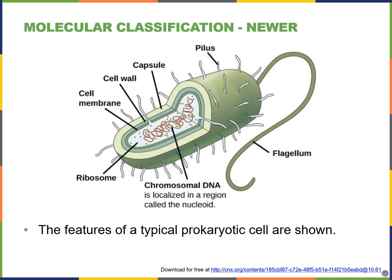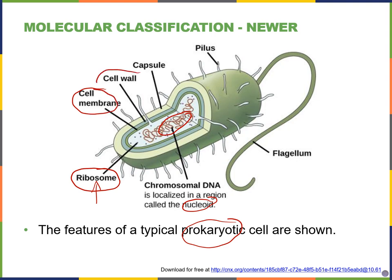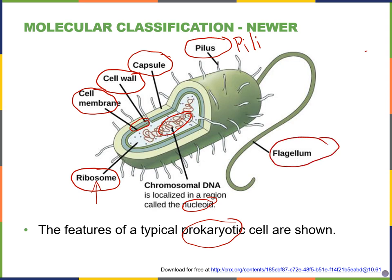Looking at a prokaryotic cell diagram, we see a nucleoid region where the chromosome is found, and some free-floating ribosomes whose job is to make proteins. Prokaryotes always have a cell membrane, and almost always have a cell wall right outside of it. Some prokaryotes — but not all — might have a capsule, a sticky layer on the outermost layer of the cell. Some have pili (singular: pilus), used for attachment and horizontal gene transfer. And some have flagella (singular: flagellum).